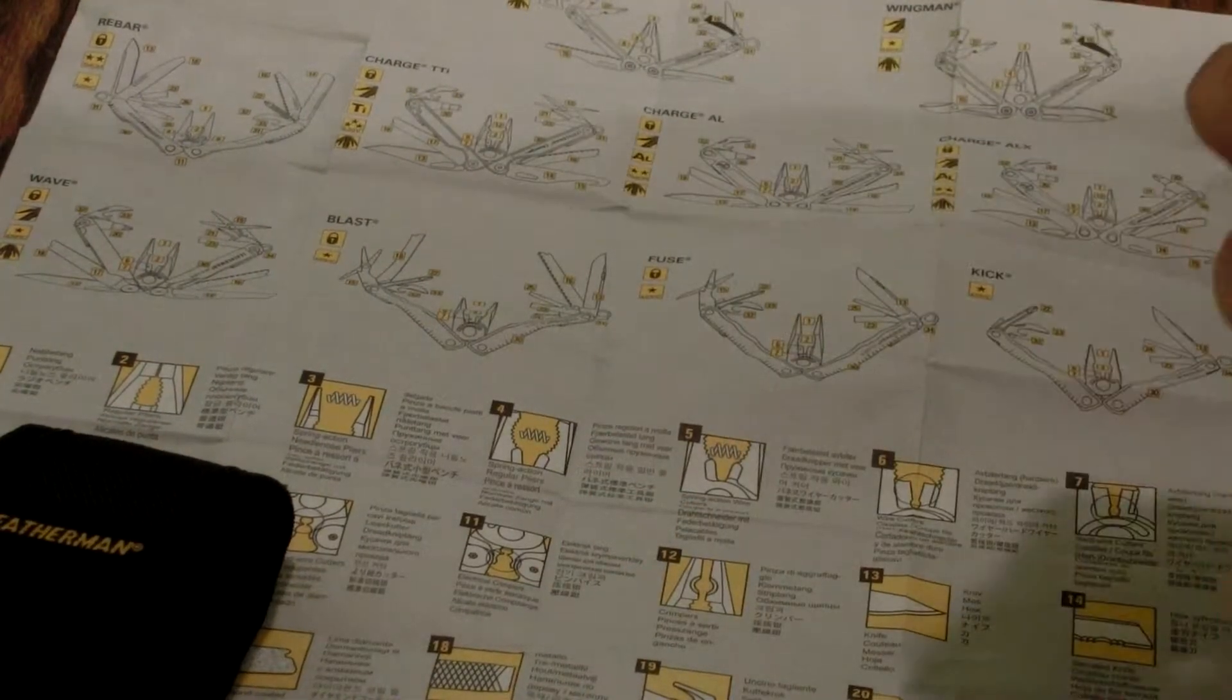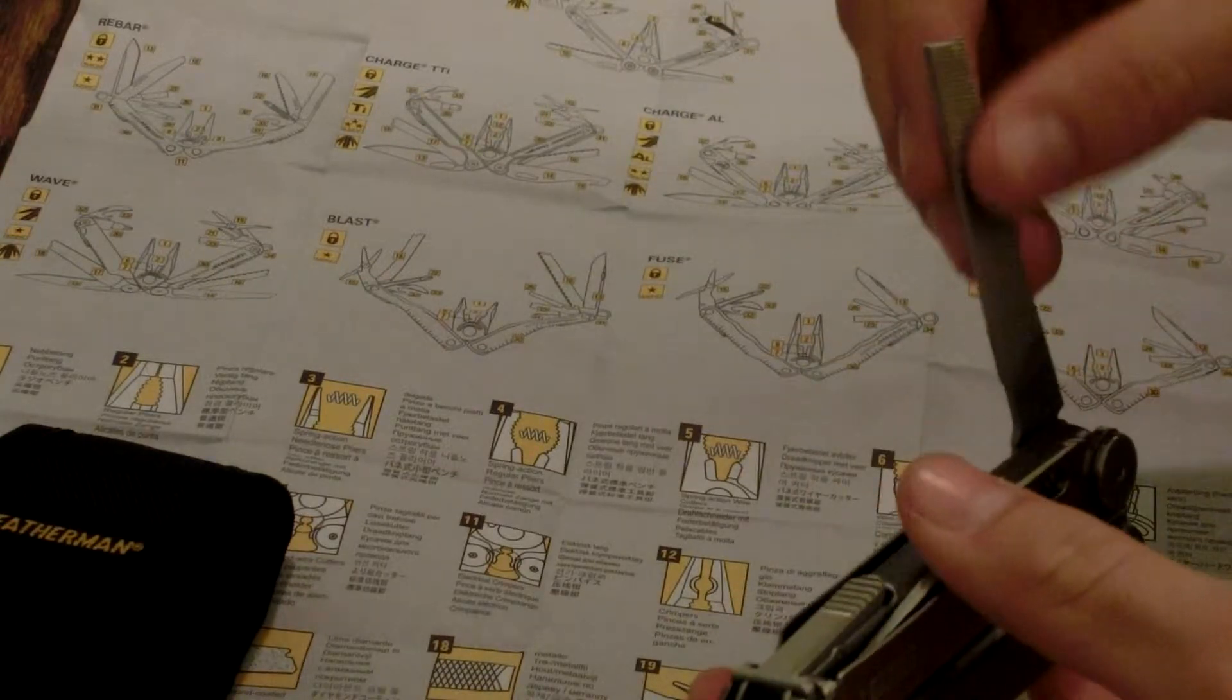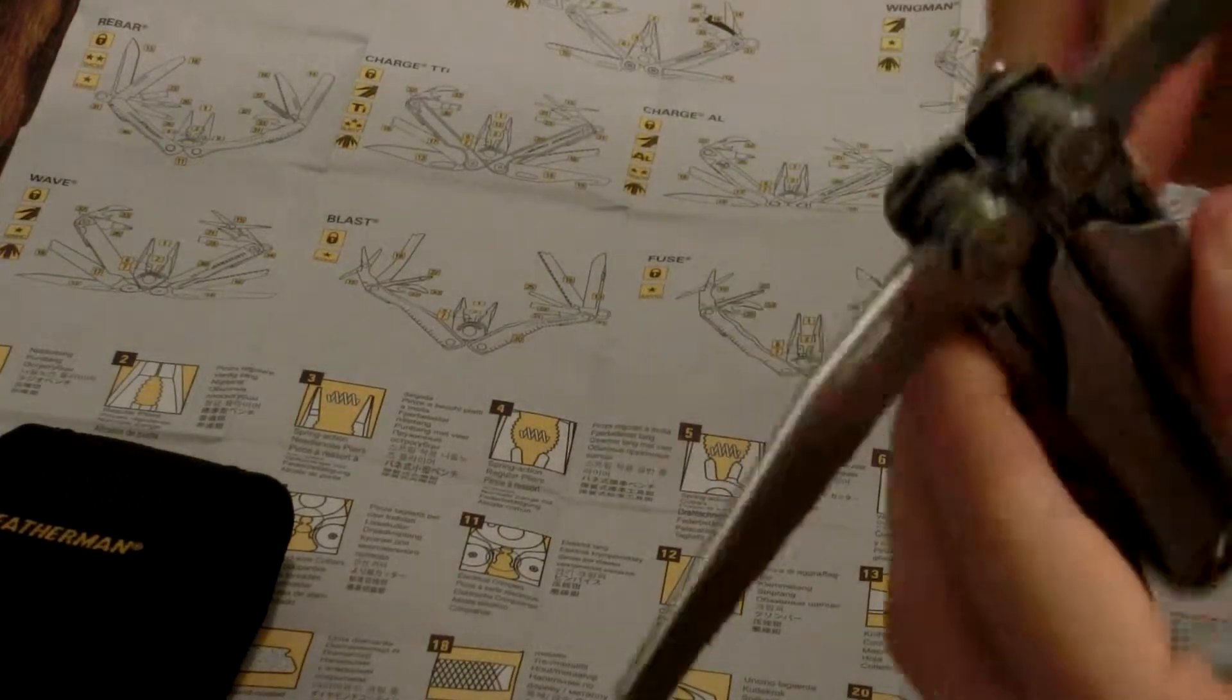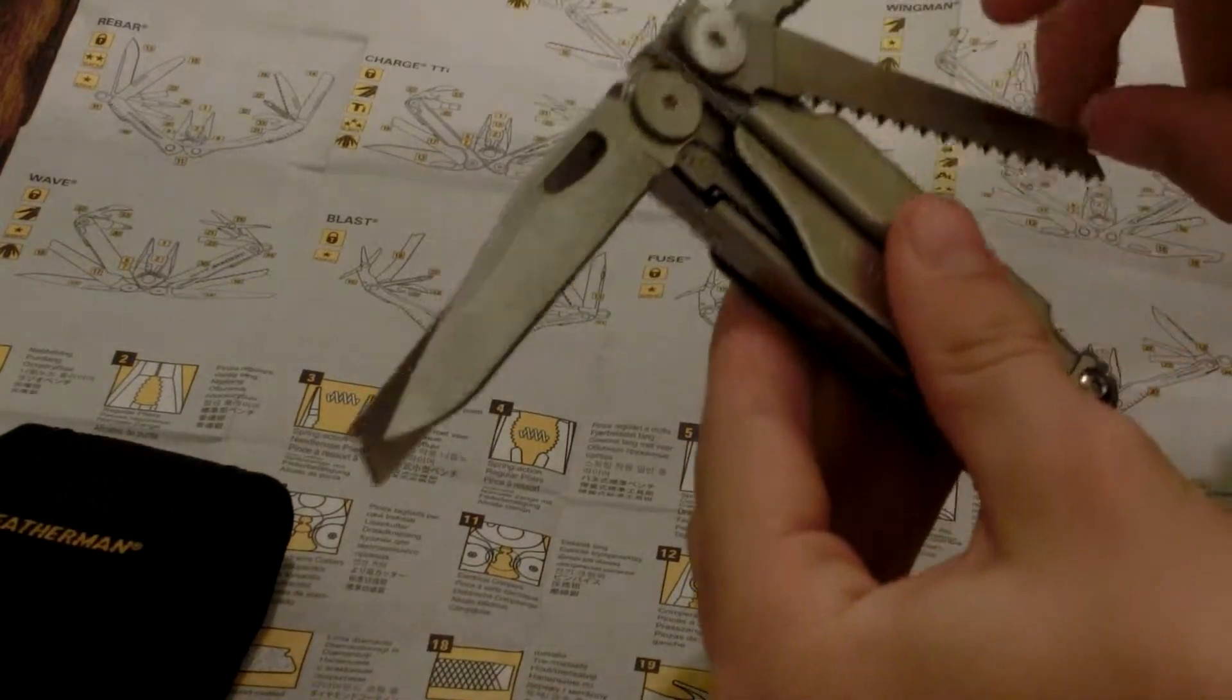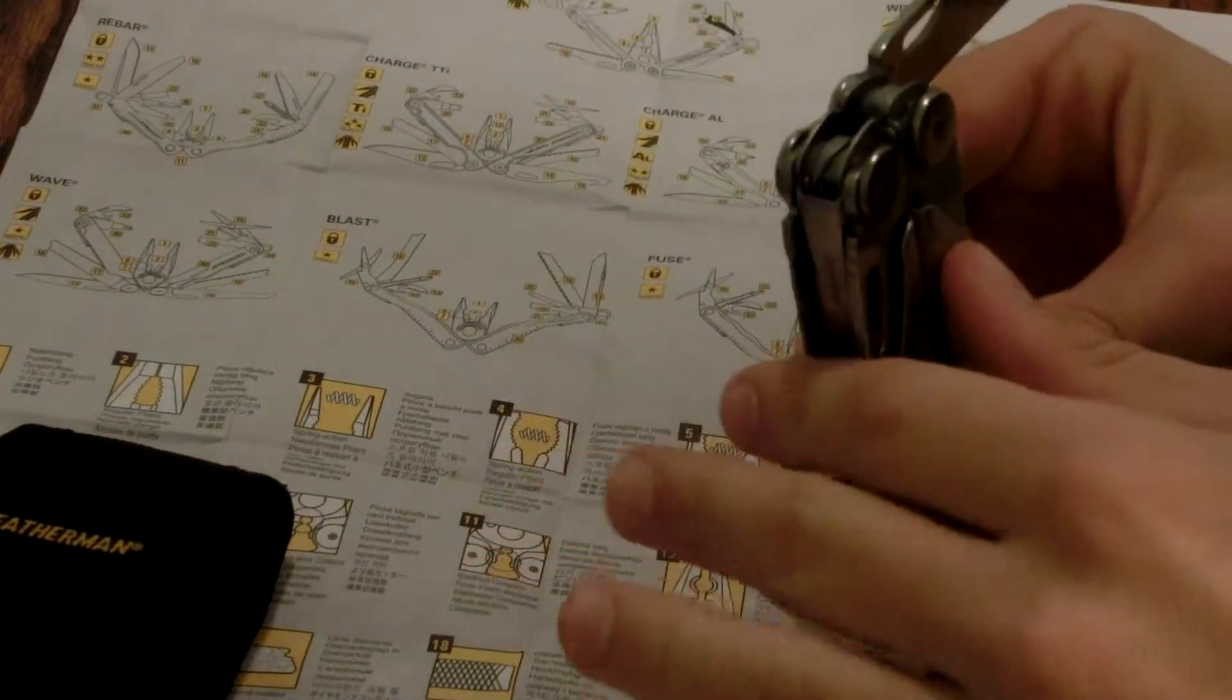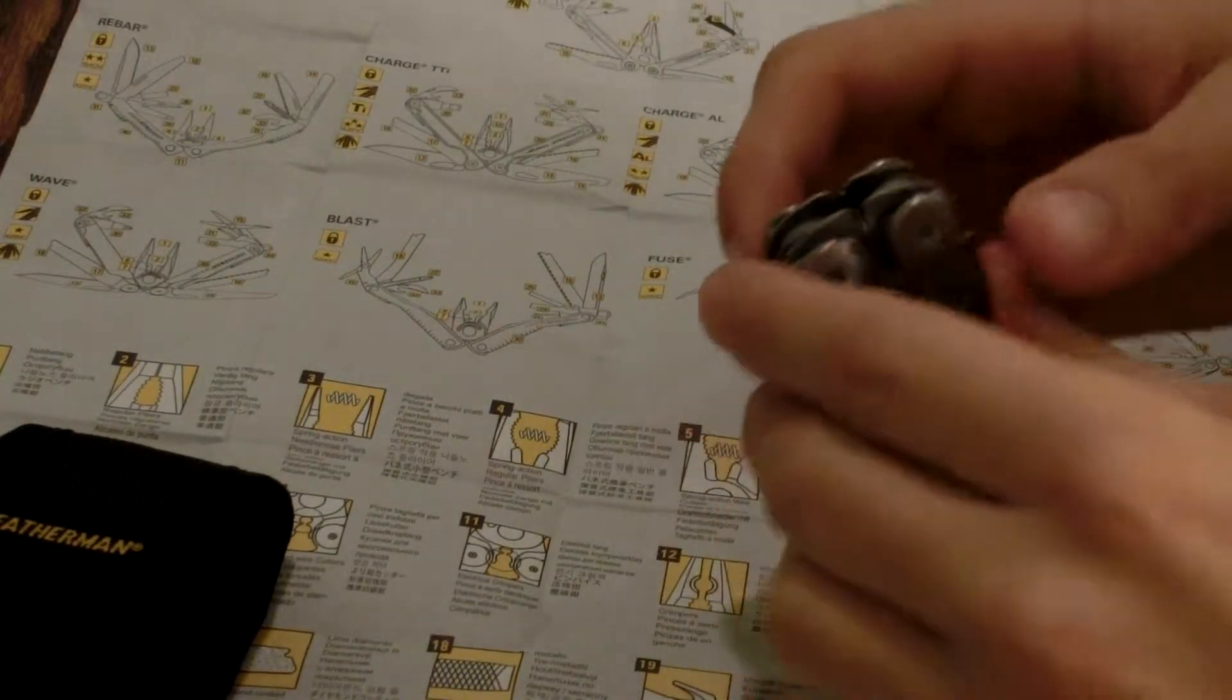Regular pliers, wire cutters, hard wire cutters, wire stripper, large screwdriver, the smaller screwdriver, the scissors, the wood/metal file, that's the diamond coated file, the couple saws, the bottle opener, the ruler, and the Phillips and flat tip eyeglasses screwdriver. That's a teeny tiny one and that's a 3/16 inch bit. So this thing has quite a lot of tools jam-packed into it.